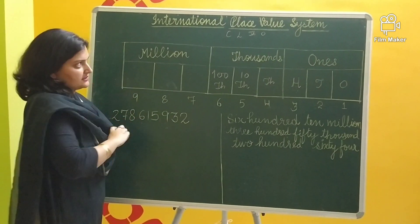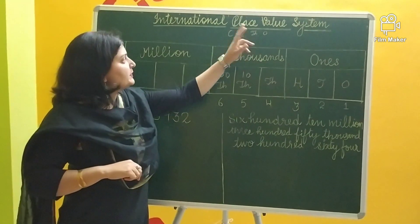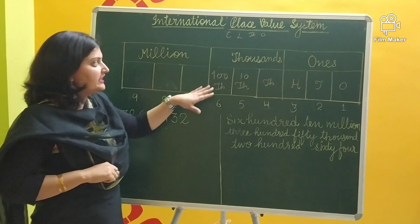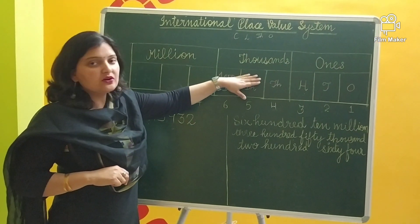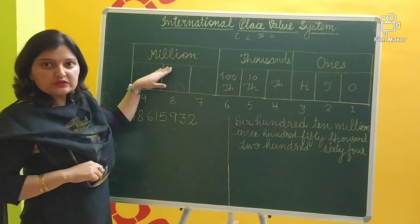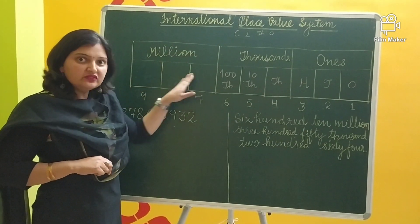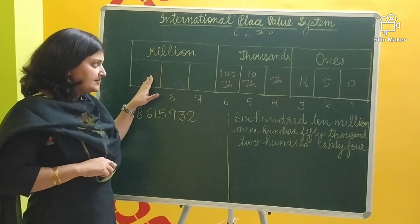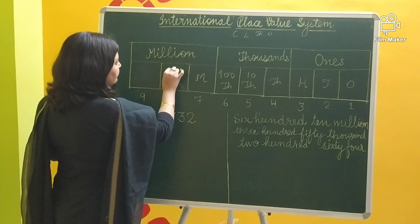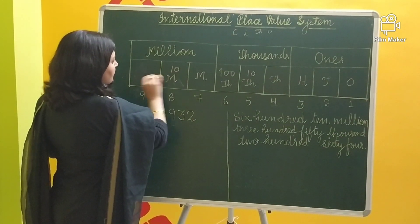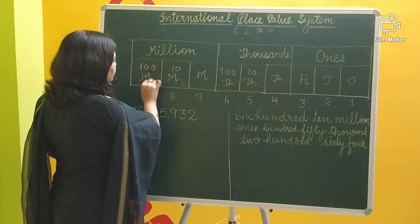In the Indian place value system, the next period after thousands is lakhs. But in the international place value system, after thousands the next period is million. In the million period, there are again 3 different places: one million, ten million, and hundred million.